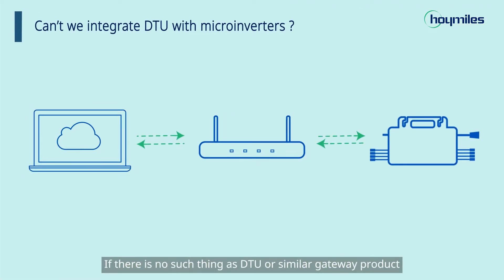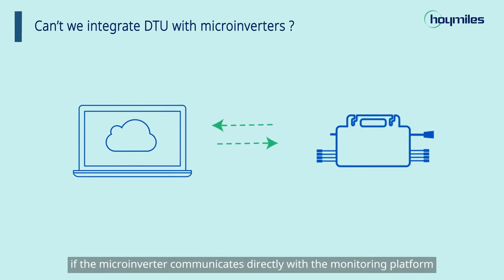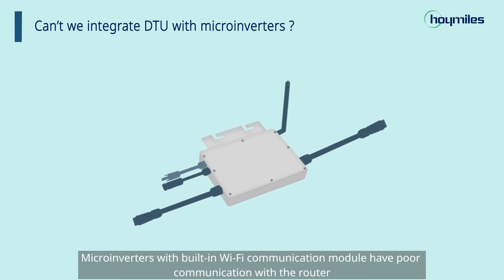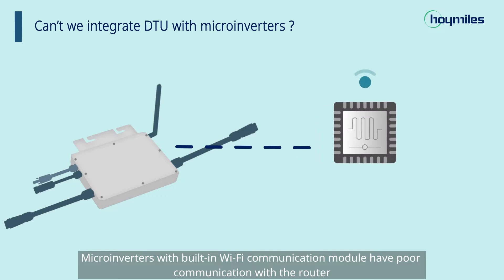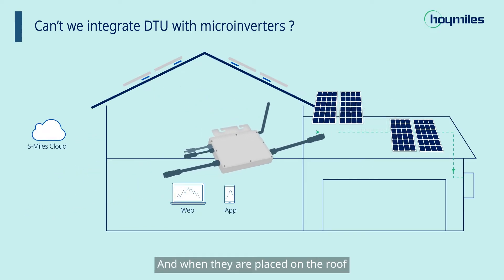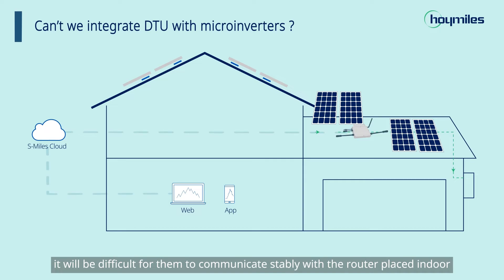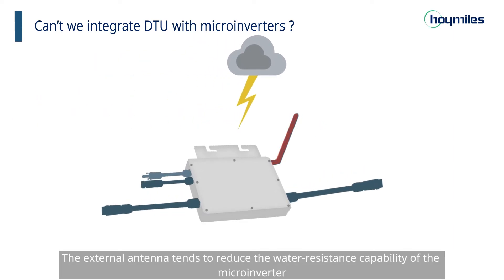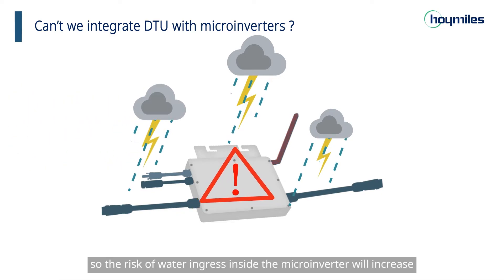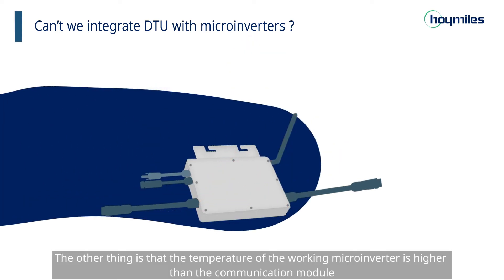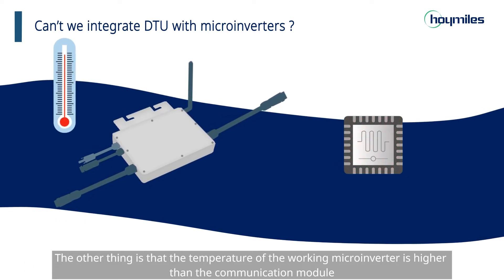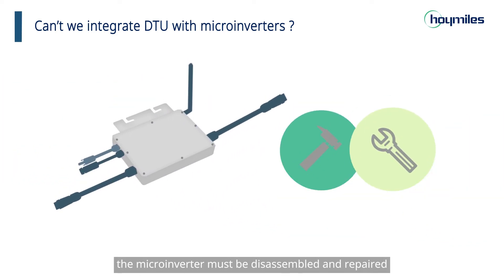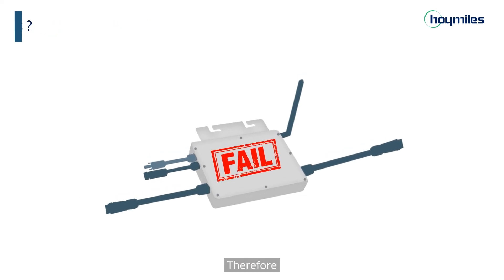If there were no gateway product such as DTU — that is, if the microinverter communicated directly with the monitoring platform — the only way to realize such communication would be to integrate the communication module into the microinverter. Microinverters with a built-in Wi-Fi communication module have poor communication with the router, so the Wi-Fi connection can be unstable. When placed on the roof, it will be difficult for them to communicate stably with a router placed indoors. What's more, for the built-in communication module to work, there must be an external antenna. The external antenna tends to reduce the water resistance capability of the microinverter, so the risk of water ingress will increase. Additionally, the temperature of the working microinverter is higher than the communication module can tolerate, so the module is more susceptible to damage. Whenever it is damaged, the microinverter must be disassembled and repaired, which can greatly shorten its lifespan. Therefore, DTU is necessary.